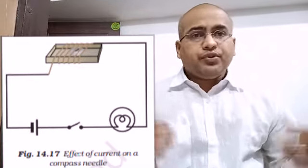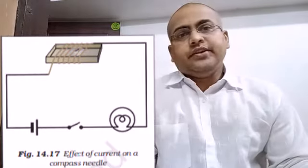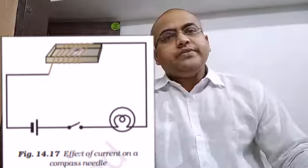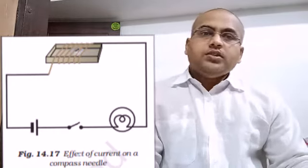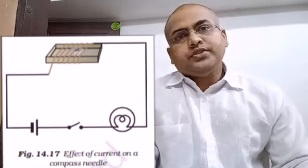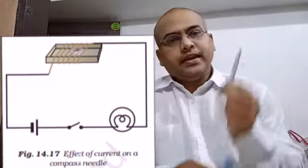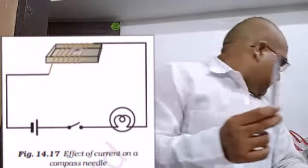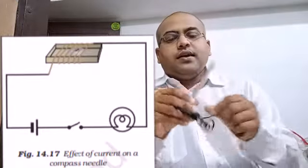So here is an activity, that is 14.6, we have to perform that in order to understand the electromagnets. First of all we are going to take a 75 centimeter long insulated flexible wire and an iron nail of 6 to 10 centimeter long.